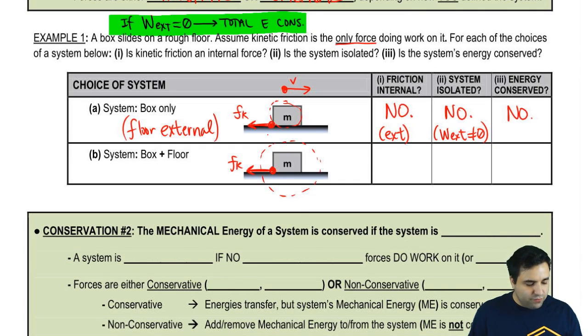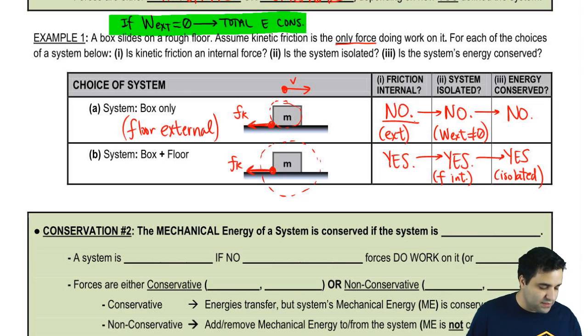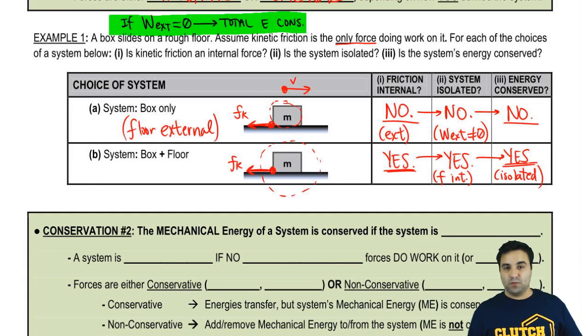Here, it's a little bit different because we include the floor. So now friction is an internal force because it's part of this. The system is isolated because the only force doing work on the system is internal. So it is because friction is internal. And energy is conserved because the system is isolated. These things are all dependent on each other. So if the force is not internal, the energy is not conserved. If the forces are all internal, then the energy is conserved.